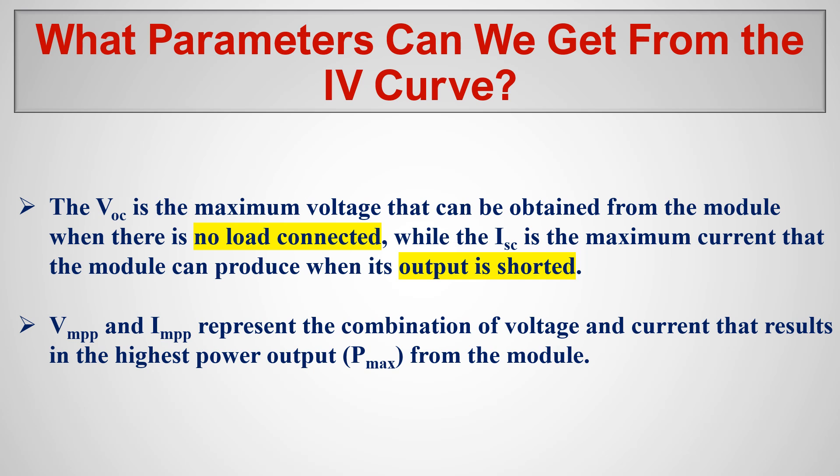VMPP and IMPP — voltage at maximum power and current at maximum power — represent the usual output of the solar PV: the current and voltage when power is at its maximum. We get maximum power under standard test conditions. When we are getting maximum power output, the IMPP tells us the current output and VMPP tells us the voltage output at that point.